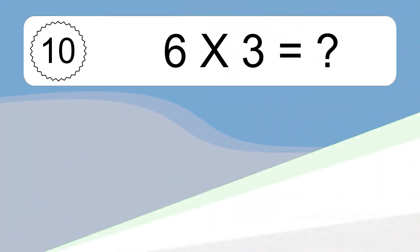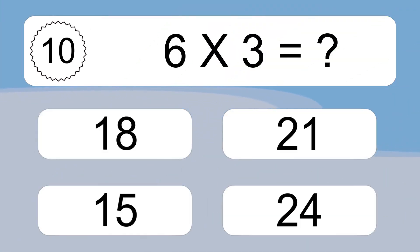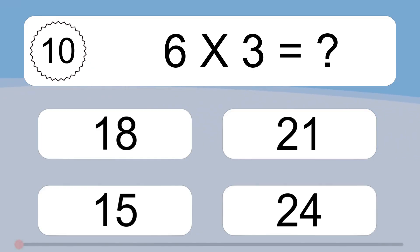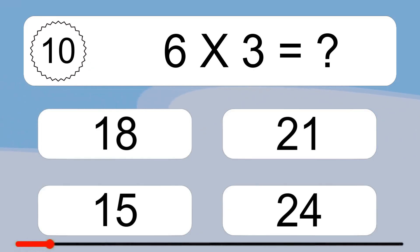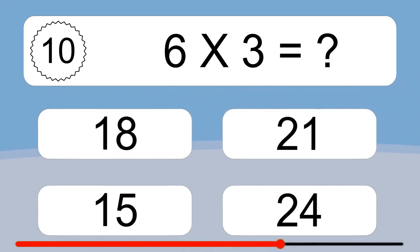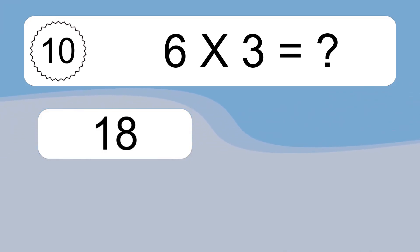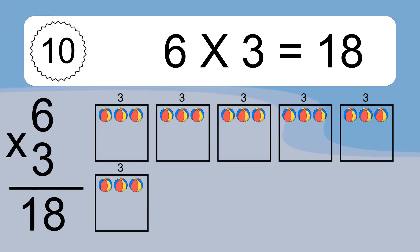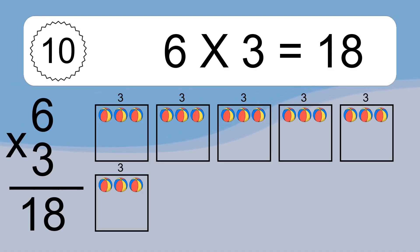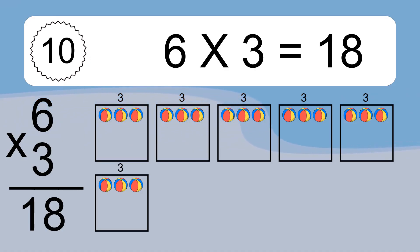6 times 3 equals what? 6 times 3 equals 18. We have 6 boxes, and each box has 3 colorful balls inside. If you count all the balls in all the boxes together, you will have 6 times 3 balls. This equals 18 balls.